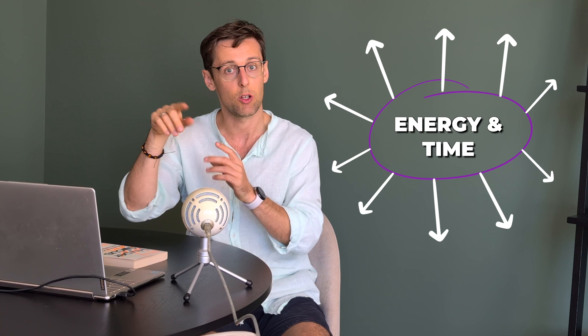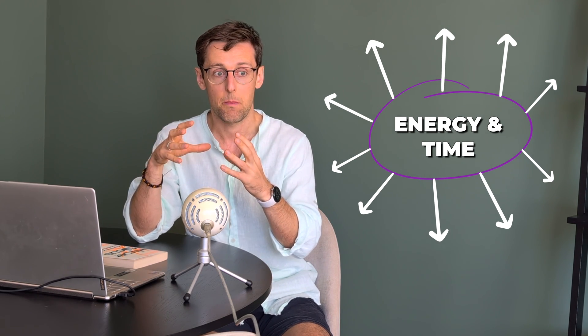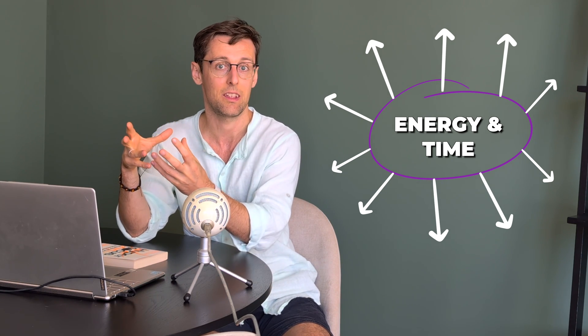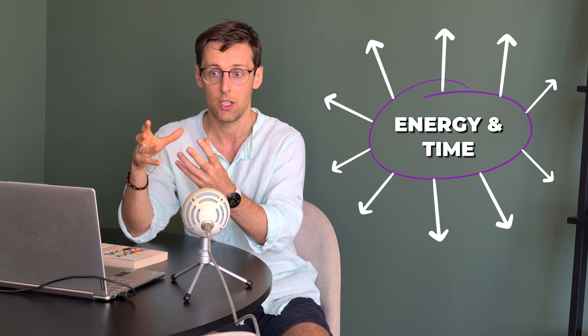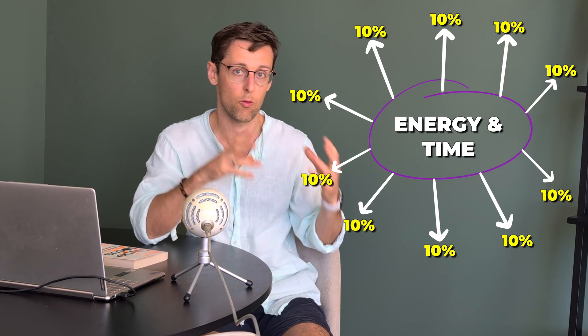So you basically have a lot of arrows going out of that circle of attention, but they will all be short, because you can only use all that energy for 10 different tasks, meaning that each task will only get 10% of all that energy.